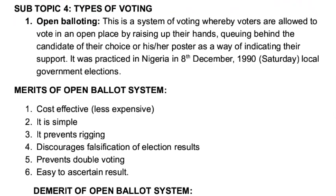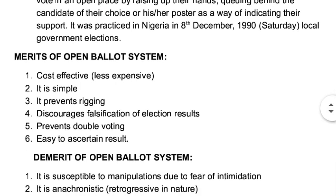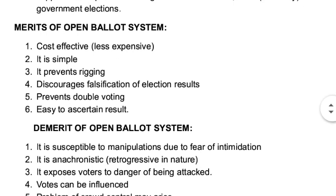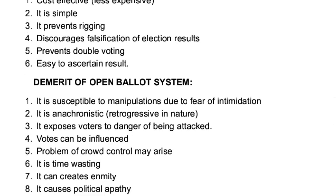Let's look at the advantages, or merits, of the open ballot system. Advantages and merits are the same thing. Number one, it is cost effective — it is less expensive. Number two, it is simple to organize. Number three, it prevents rigging. Nigeria has practiced this system before in our early days of politics after independence. Number four, it encourages falsification of election results. Number five, it prevents double voting. Number six, it is easy to ascertain results.